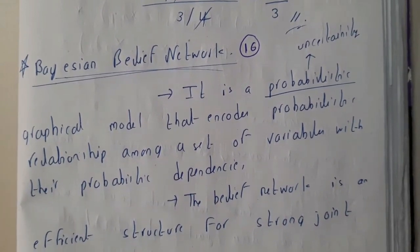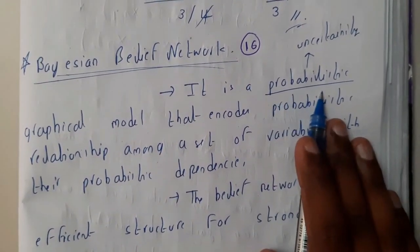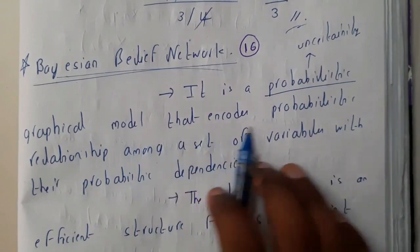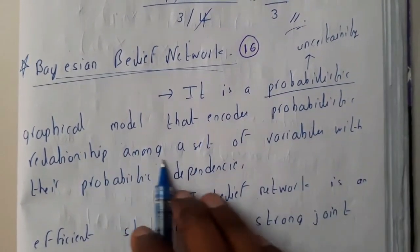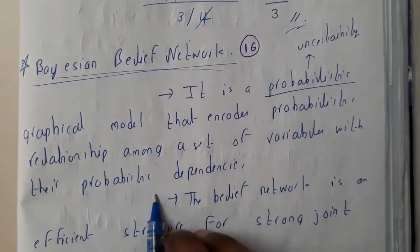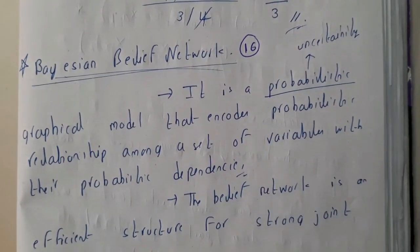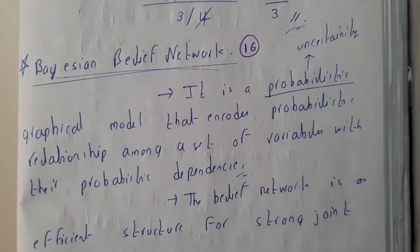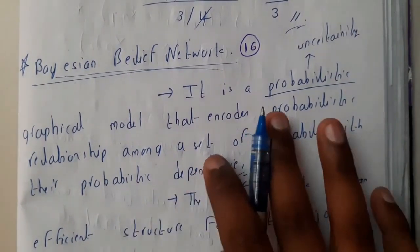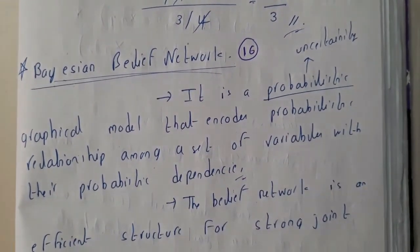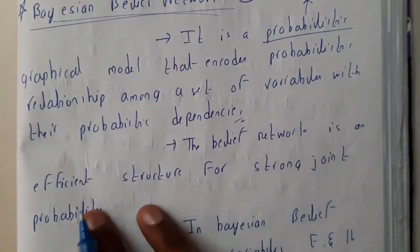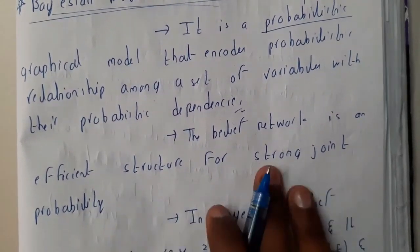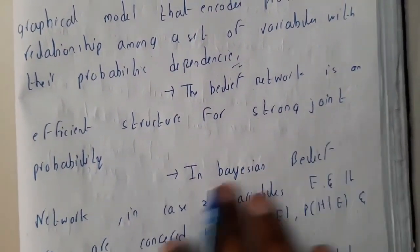It is a probabilistic graphical model that encodes the probabilistic relation among a set of variables with probabilistic dependencies. Probabilistic is nothing but determining the uncertainty. Once we go to the example, you'll have a clear idea.